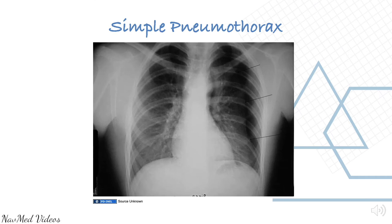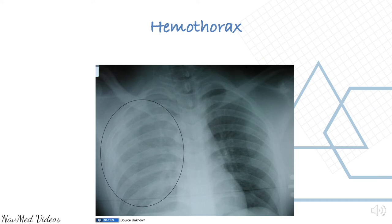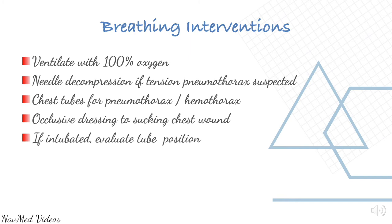A chest X-ray if available helps to assess the lungs. This is an example of simple pneumothorax — you can see a massive demarcation line where the arrows point. This is an example of hemothorax, which is blood in the thoracic cavity. Breathing interventions include ventilating with 100% oxygen, needle decompression if tension is suspected, chest tube for pneumothorax and hemothorax, occlusive dressing to sucking chest wounds, and if intubated, evaluate tube position.